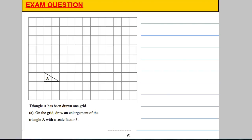For the second practice question: a triangle on a grid, enlarge by scale factor 3. The triangle is 2 across and 1 up, so the new shape is 6 across and 3 up. Using a ruler, mark 6 across and 3 up, then join with the diagonal. That gives the enlargement by scale factor 3.